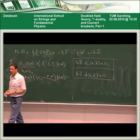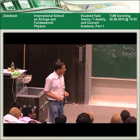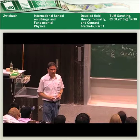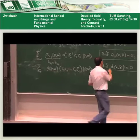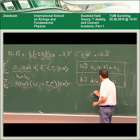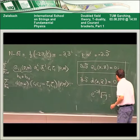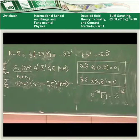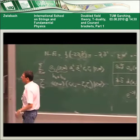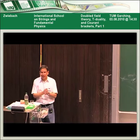The question about the dilaton: the dilaton d is not the same as φ. There is a connection: e^{−2φ}√{−g} = e^{−2d}. They are related but they're not the same. So we've covered the first quantization — in the last part we're going to understand the T-dualities that we're going to need to work with.